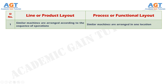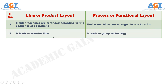Number 1: In line or product layout, similar machines are arranged according to the sequence of operations required for manufacturing the product. Whereas in process or functional layout, similar machines are arranged in one location for manufacturing the product. Number 2: Product layout leads to transfer lines, whereas process layout leads to group technology.